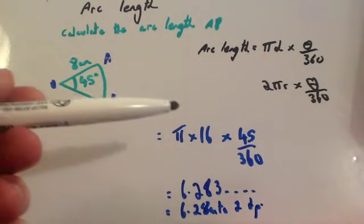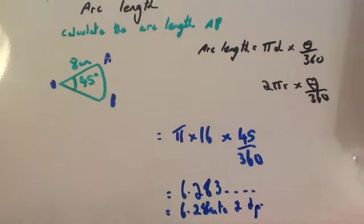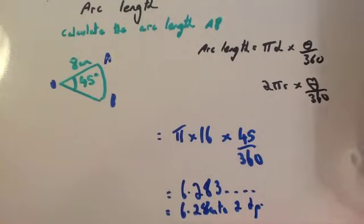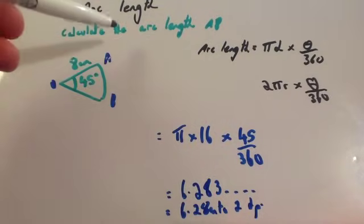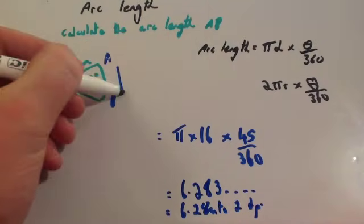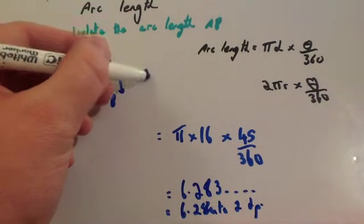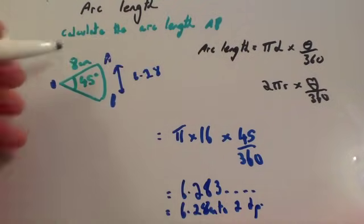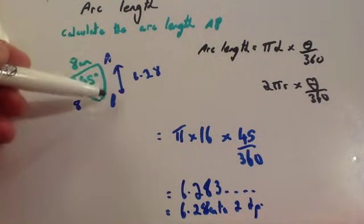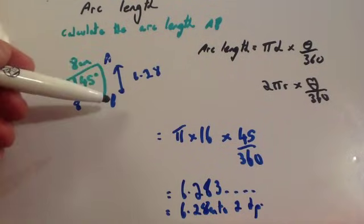All you're doing is pi times the diameter divided by 360 and times it by 45. The order you do it in your calculator can vary. I could have done 2 times pi times 8 instead of pi times 16. If the question asked for the perimeter of the sector instead of just the arc length, you would add the arc length of 6.28 to the two radii of 8 and 8.